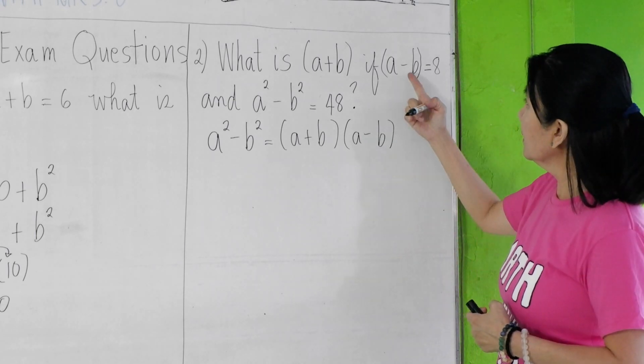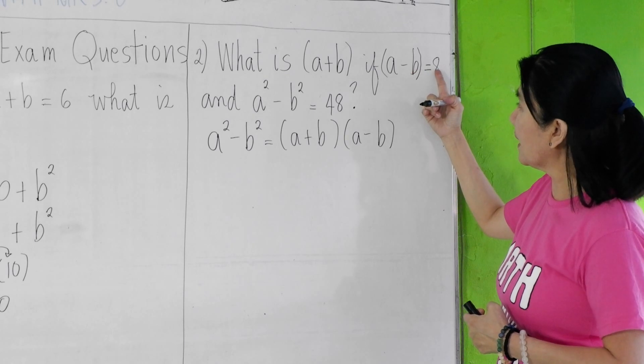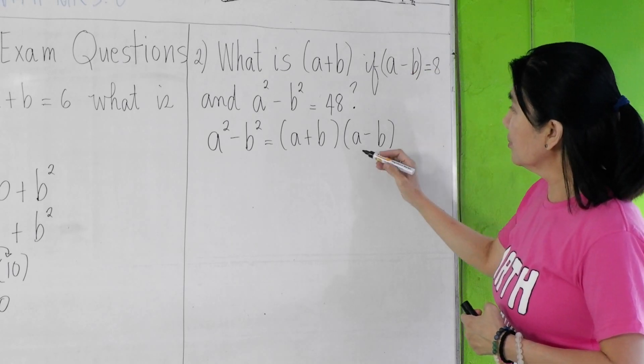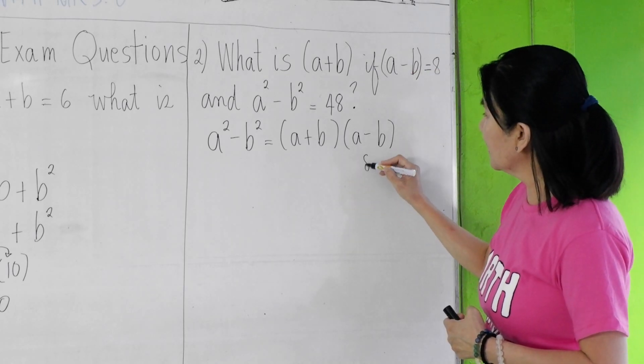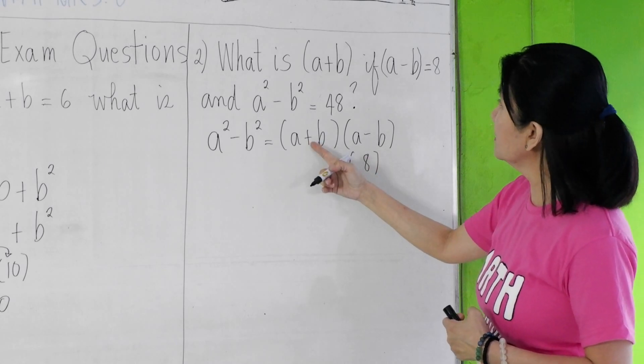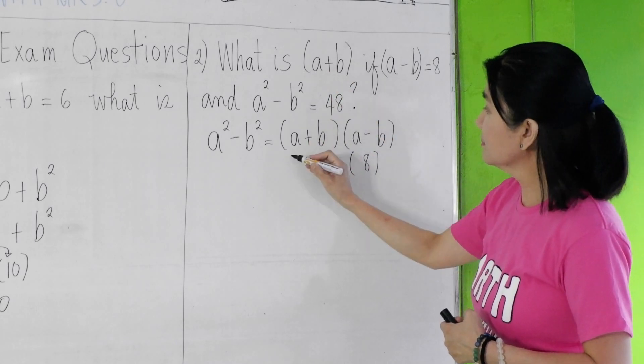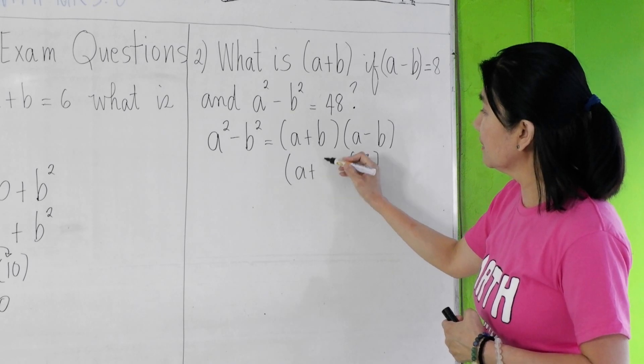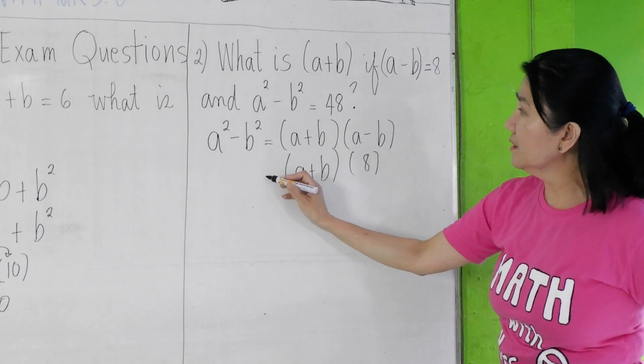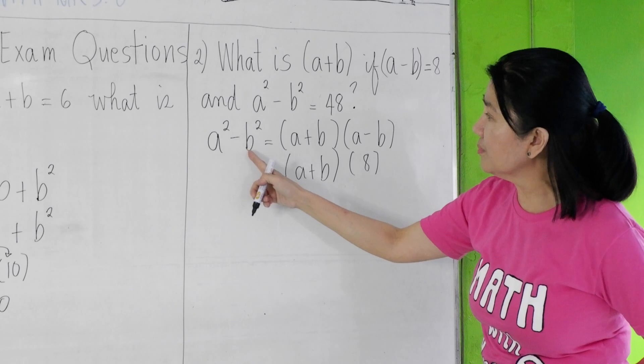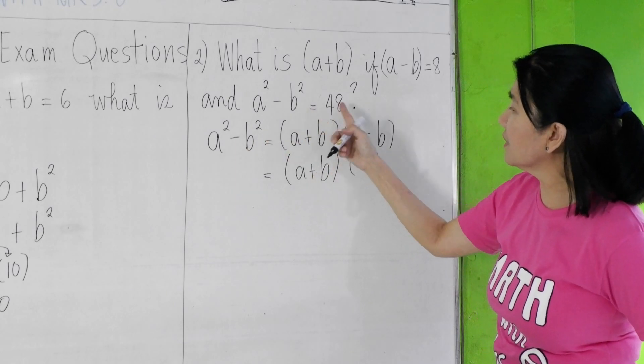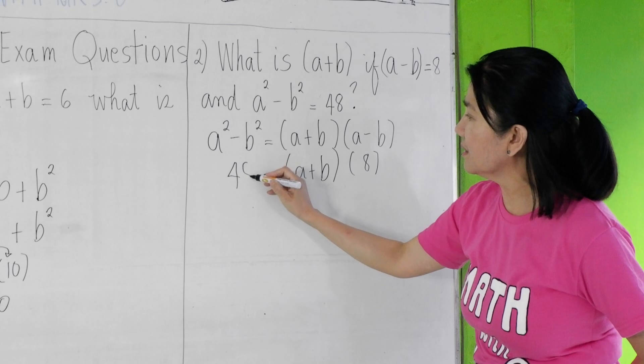Now, a-b is given to be 8, so we plug in the value of 8 here. And a+b is unknown. So a+b here equals... a²-b² is given to be 48. Substitute the value here.